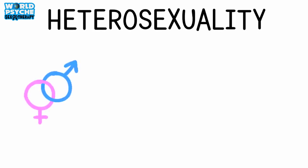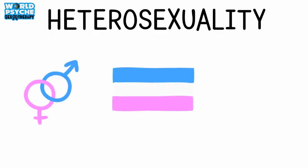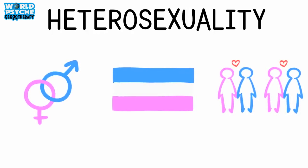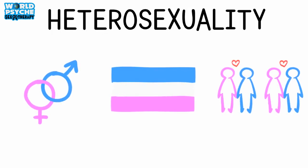3. Heterosexuality. Heterosexuality is probably the most well-known sexuality, and whether right or wrong, it is often thought of as the default. This is known as heteronormativity. It means attraction to genders other than your own, and is most commonly used to refer to binary genders.